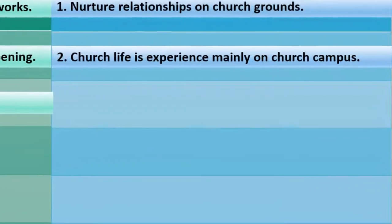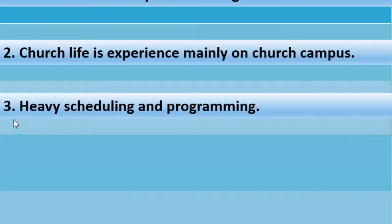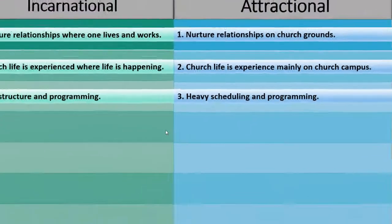Number three for attractional: highly structured and organized. With a variety of scheduled services and programs, bulletins and calendars are created many months in advance to keep the congregation informed of all the available activities and information on how to participate. Oftentimes, the bulletins will contain the order of service and a menu of available programs for which to sign up. There is little flexibility once the schedule is set.